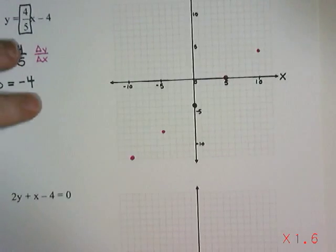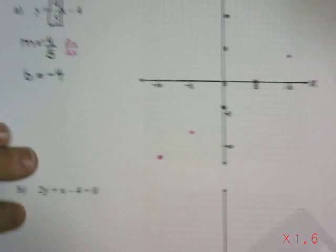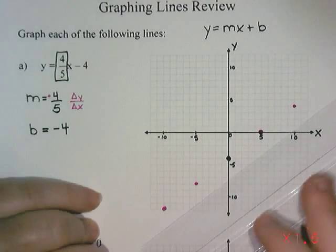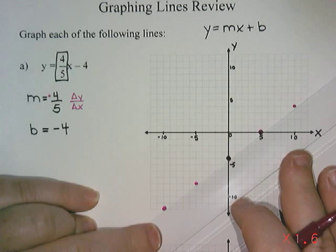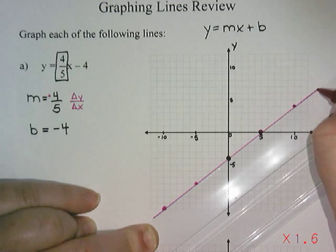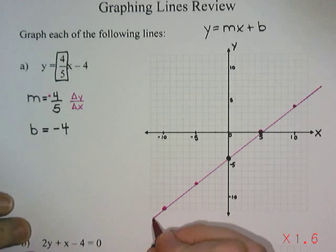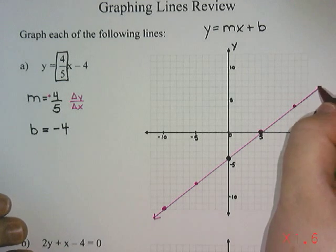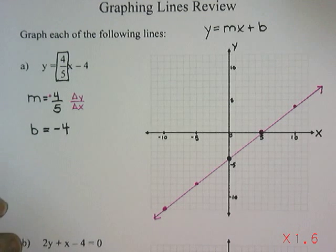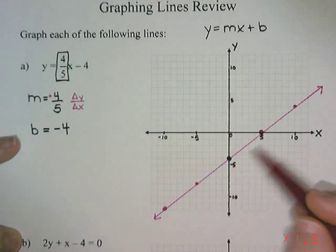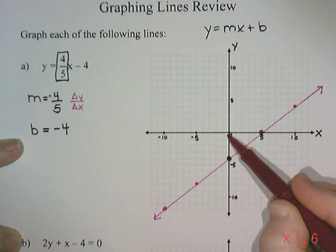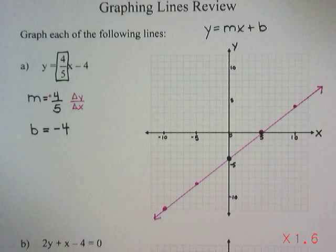And then once you've made as many points as you possibly can, what we want to do is draw a line. So using a straight edge, a ruler, something that's straight, we're going to draw a line that goes from one side of the grid all the way to the other. And it's going to have arrows on the ends to show that there are more points if you kept going, but that we've just hit the end of the grid. So to graph this line, what we did was we plotted our y-intercept at negative 4, and then we used our slope up 4 and over 5 to get the remainder of our points.